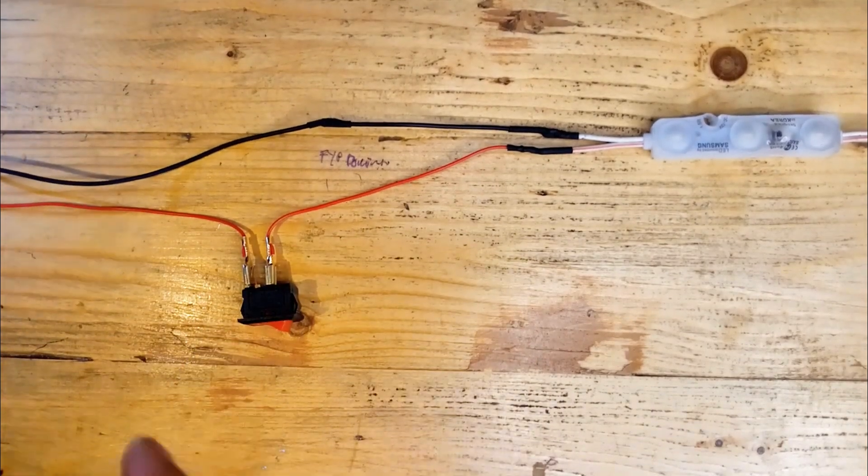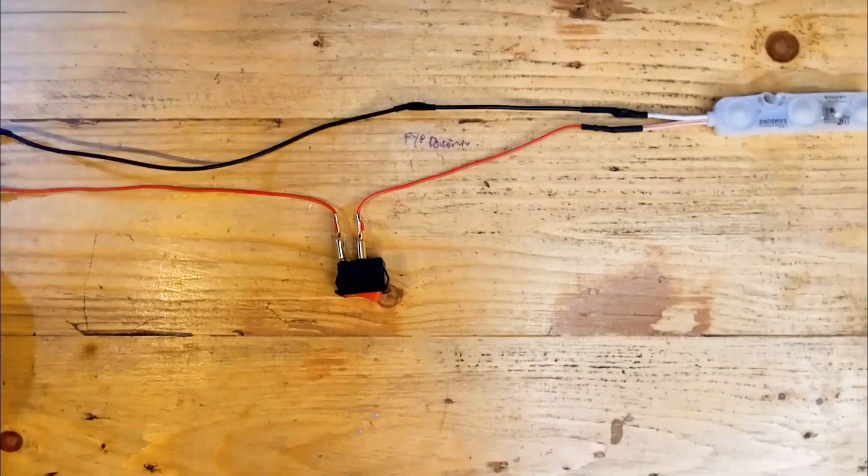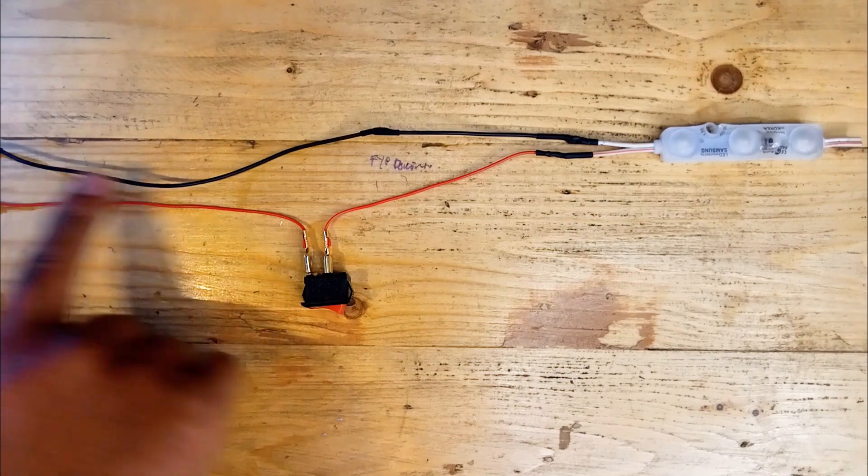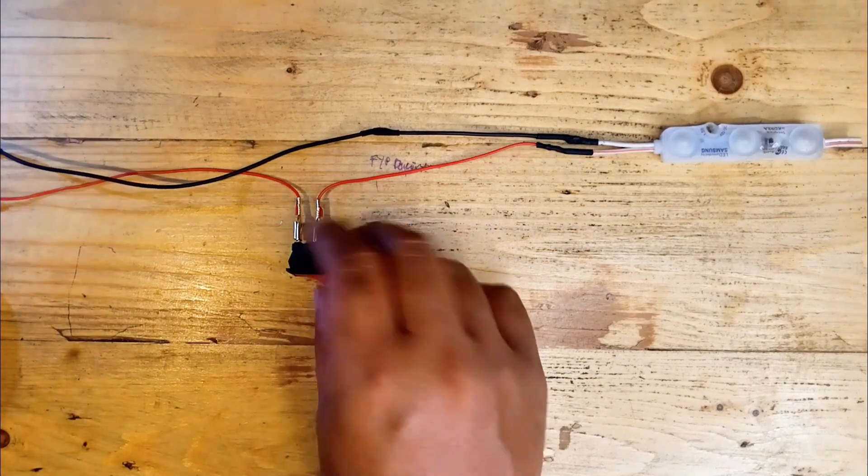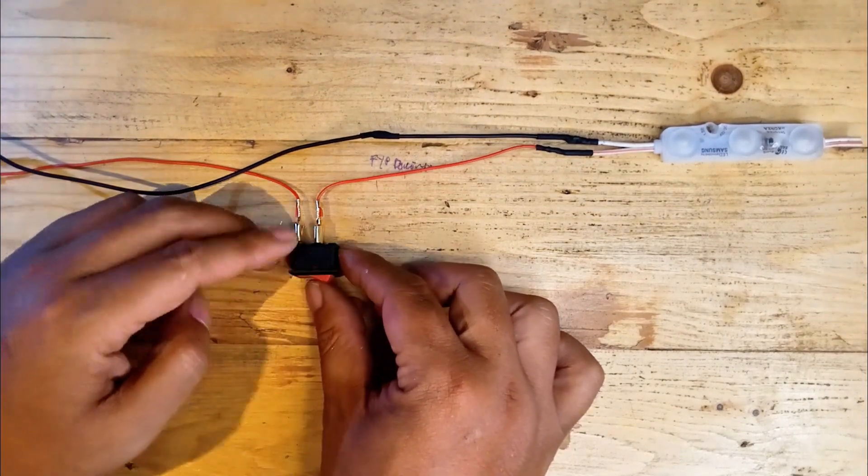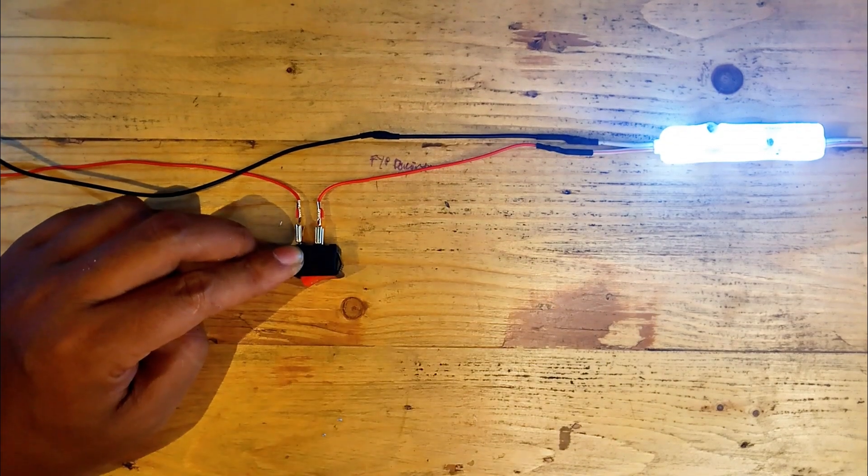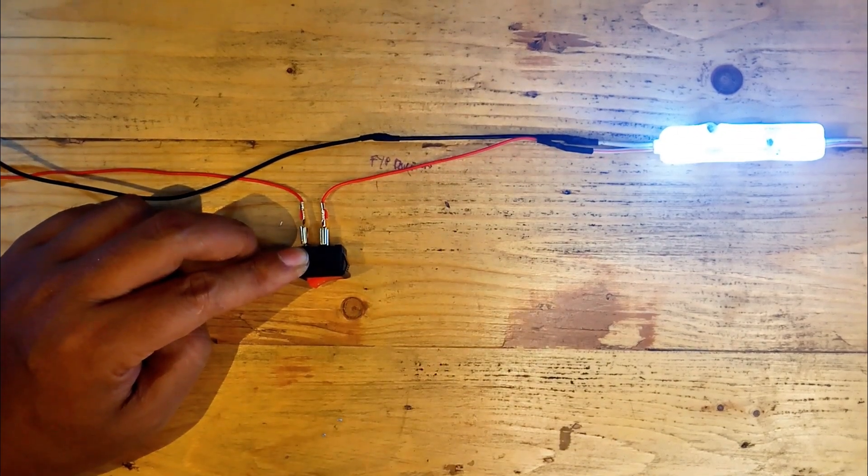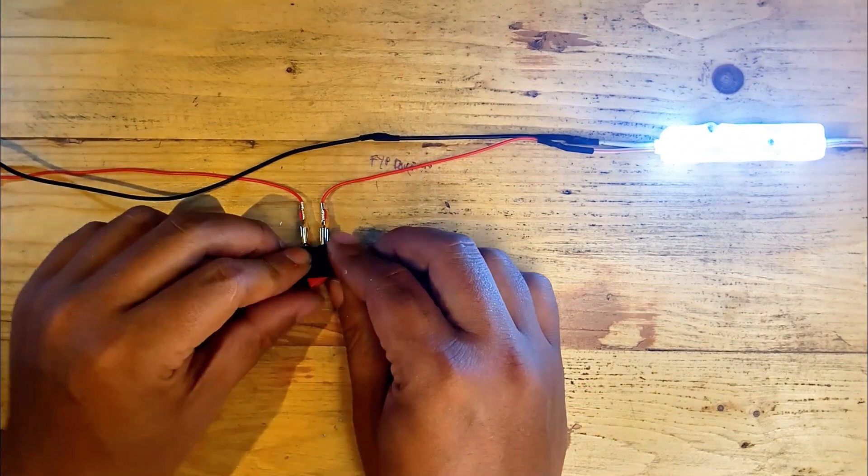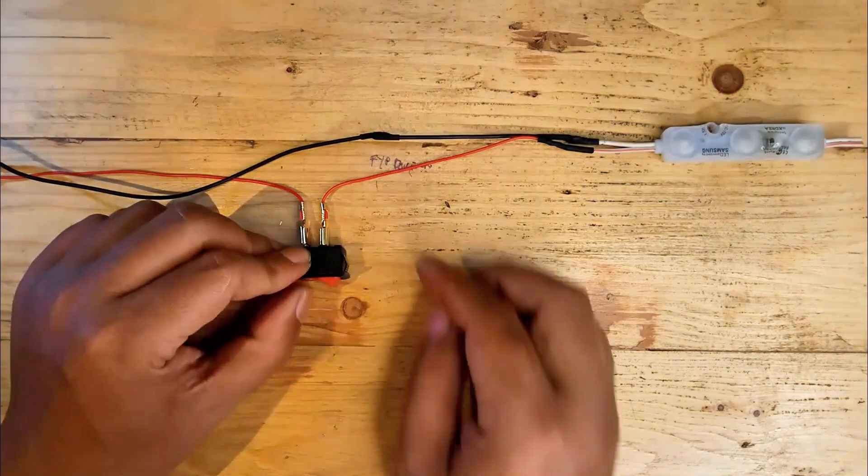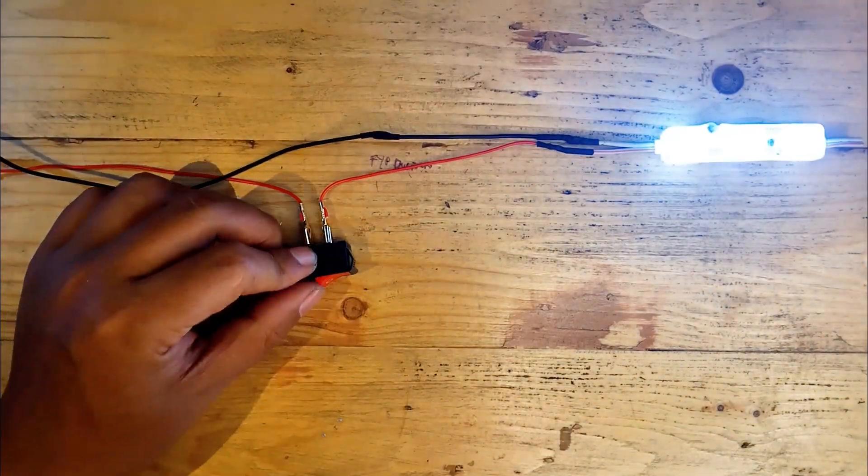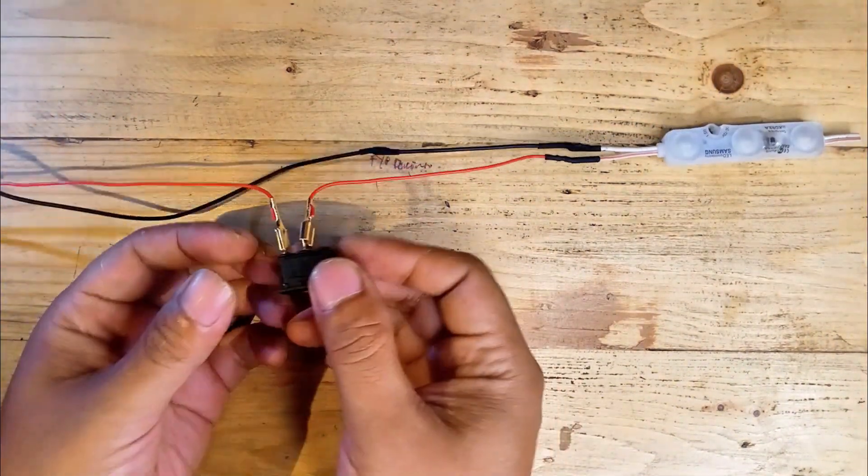Here's a simple circuit diagram. The battery provides the DC power. One terminal connects to the switch which acts as a control. The other side of the switch connects to the positive terminal of the LED light. The negative terminal of the LED light connects back to the battery's negative terminal completing the circuit.